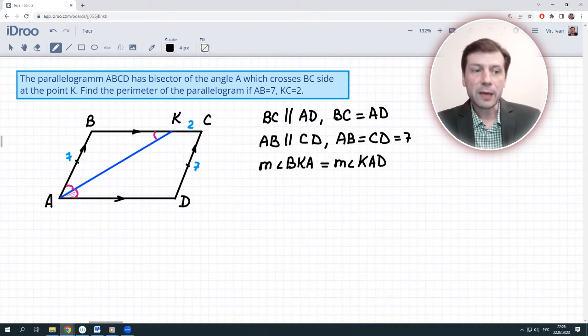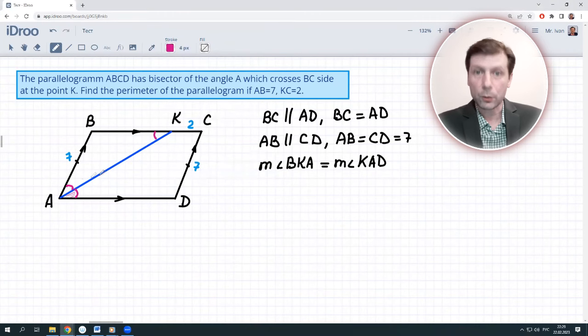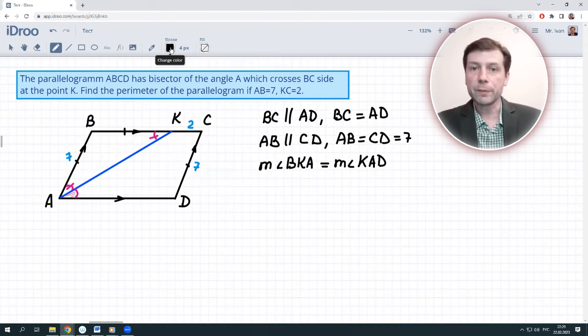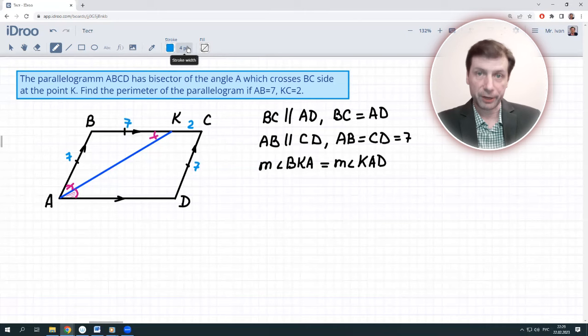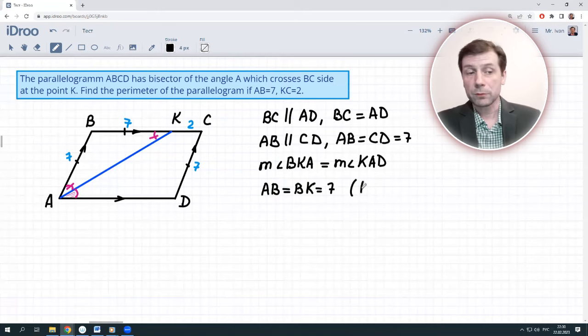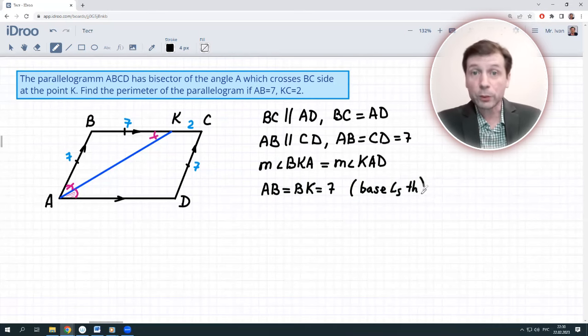Looking at triangle ABK, we should understand it's isosceles. Why? Because of the base angles theorem. If the base angles of a triangle are congruent, the triangle is isosceles. What does this mean? It means that AB equals BK. So we can write that BK is also equal to 7. That's quite cool.